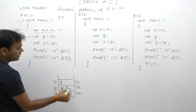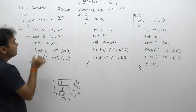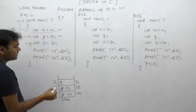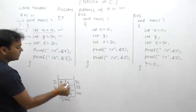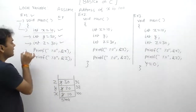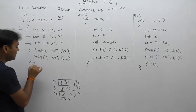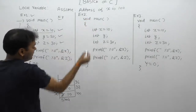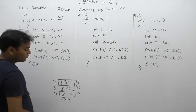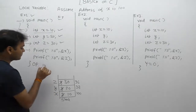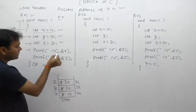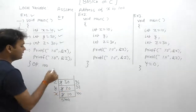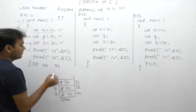According to the second statement, y is initialized to 20. Then control moves to the next statement: z is initialized to 30. After completing the third statement, the printf statement executes. It prints the address of x — which, as we assumed, is 100 according to the stack diagram. The address of z is 96.